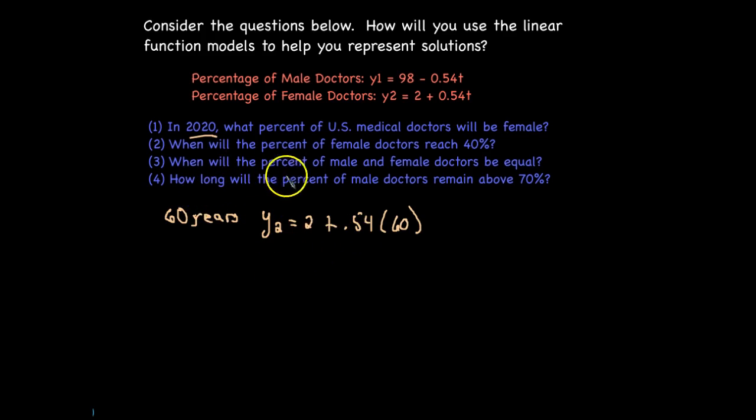Let's look at the second one. When will the percent of female doctors reach 40%? Again, we're looking at Y2, and we want it to equal or reach 40%. So where do we put the 40? Do we put it in for time or do we put it in for percent? We would put it in here for percent, and then we could write out our equation. You'll notice that on both of these, we could solve these to find the answers, but right now we're just considering how to represent these symbolically.